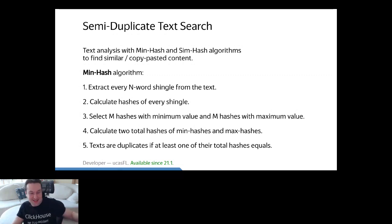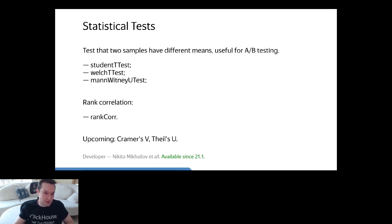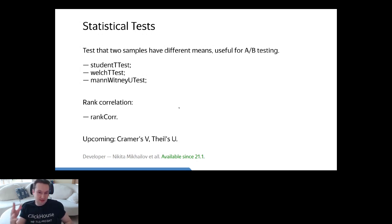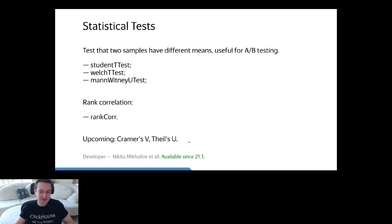We also have a variety of statistical tests inside ClickHouse. For example, the Student t-test and Welch t-test for testing if two different samples have different means. If you are into statistics, you will definitely figure out the differences. We are also going to implement Cramér's V and Theil's U.